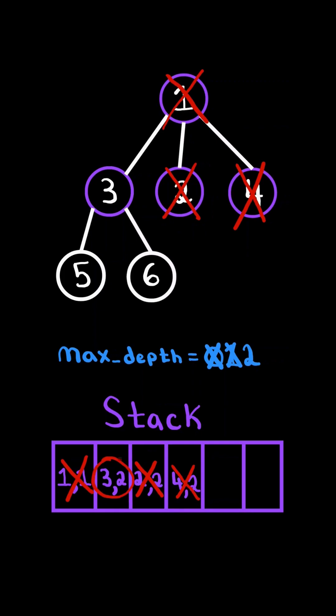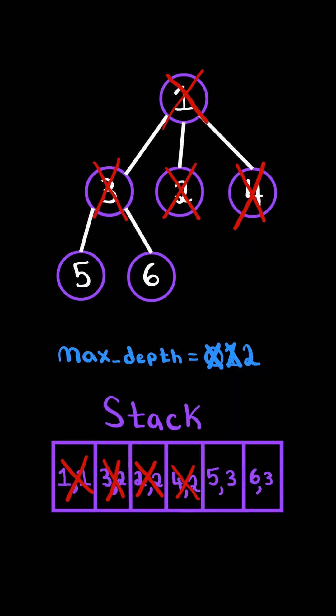We pop from the stack, and again its depth is the same as max depth, so we don't update. But node 3 does have children, so we append them to the stack, along with its depth, which is 1 more than its parent's depth. And we continue.